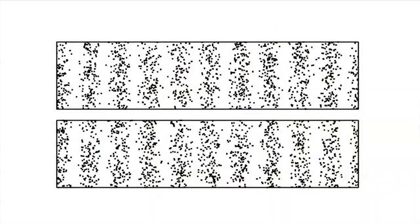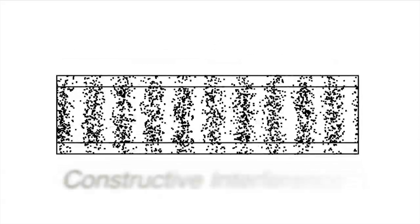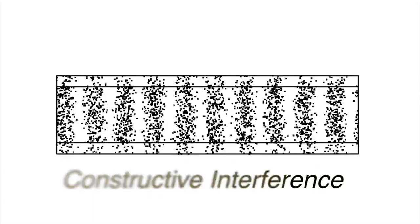If the headphone speaker also makes the air vibrate at 256 times per second, then the two sound waves might add. The back and forth motion of the air molecules in your ear caused by the synthesizer might add to the back and forth motion caused by the headphone speaker, and the sound would seem extra loud. This is an example of constructive interference.